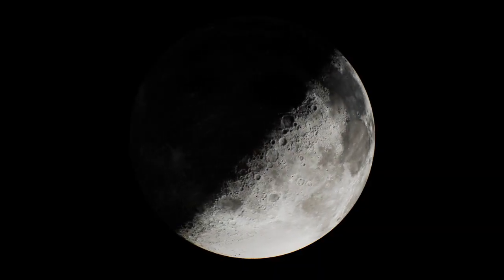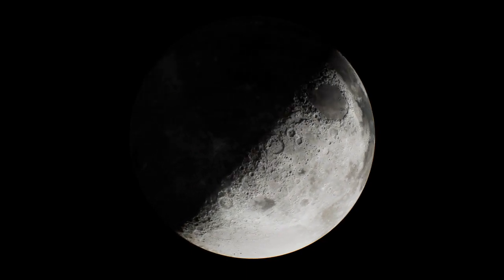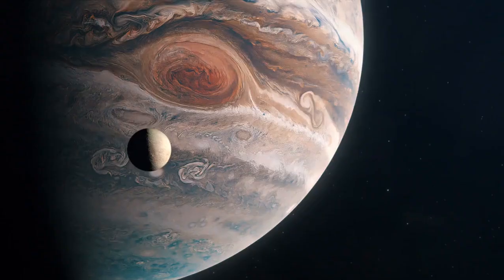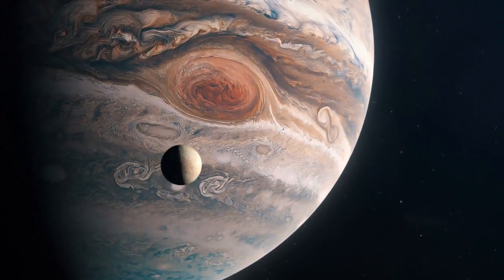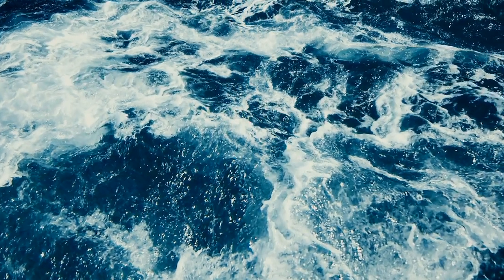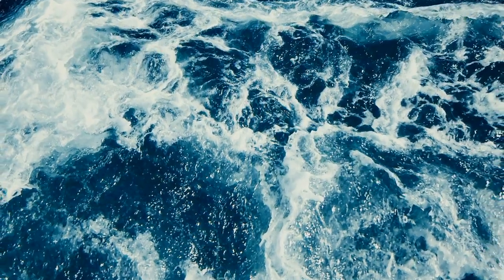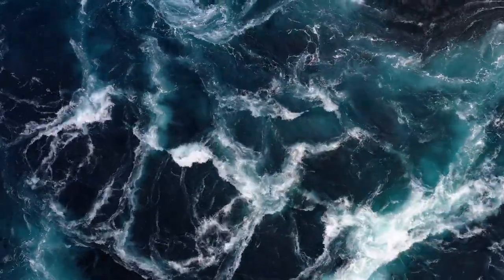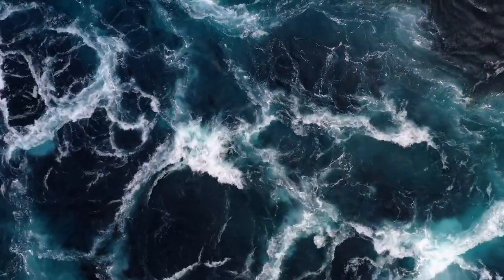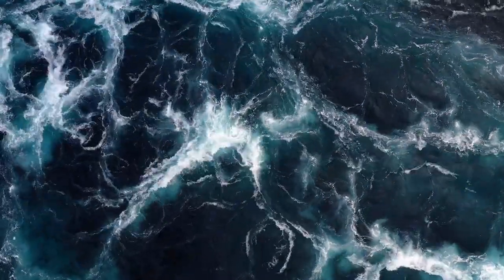Our next stop on this cosmic journey leads us to two intriguing moons in our own solar system: Enceladus, a moon of Saturn, and Europa, a moon of Jupiter. Scientists have gathered compelling evidence of vast subsurface oceans on both of these celestial bodies. These hidden oceans, along with geothermal activity, offer promising conditions for the development and sustenance of life.